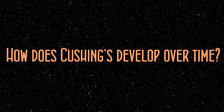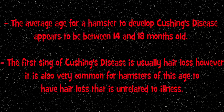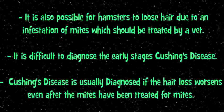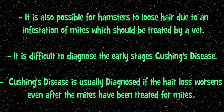How does Cushing's develop over time? The average age for a hamster to develop Cushing's disease appears to be between 14 and 18 months old. The first sign is usually hair loss. However, it is also very common for hamsters of this age to have hair loss that is unrelated to the illness, such as from an infestation of mites, which should be treated by a vet.